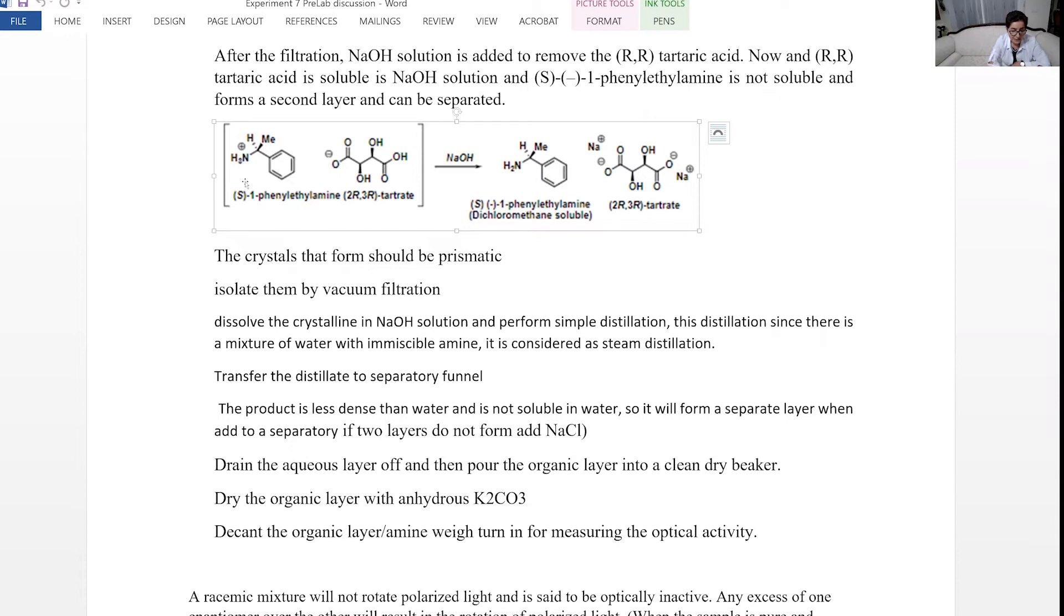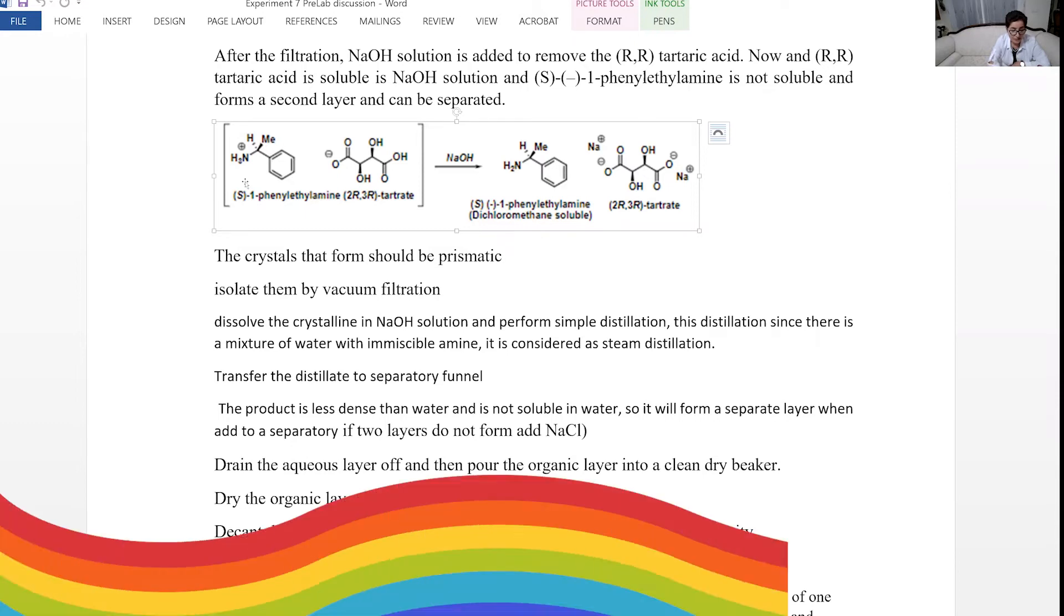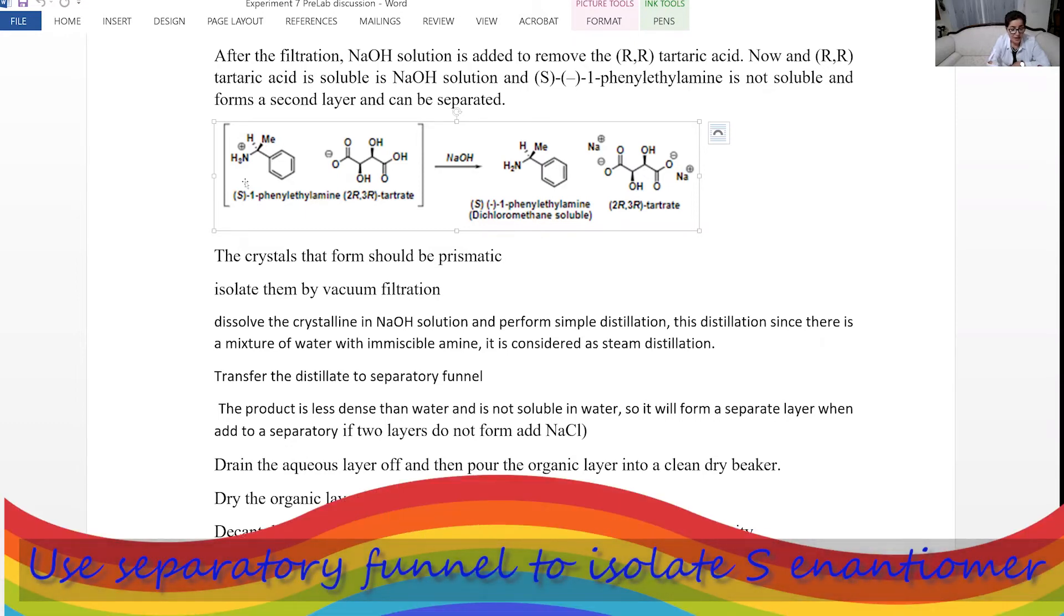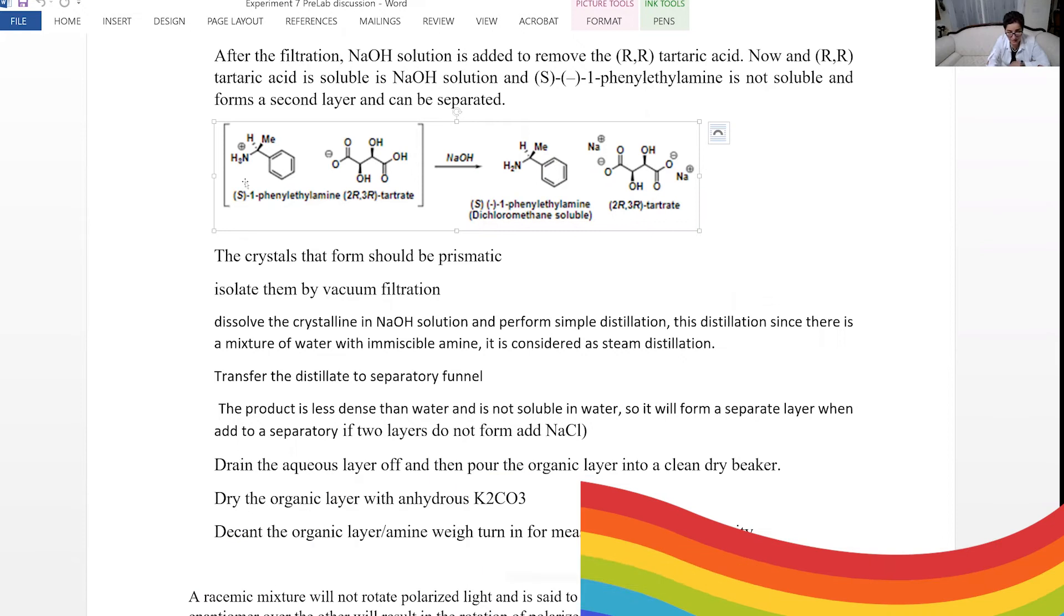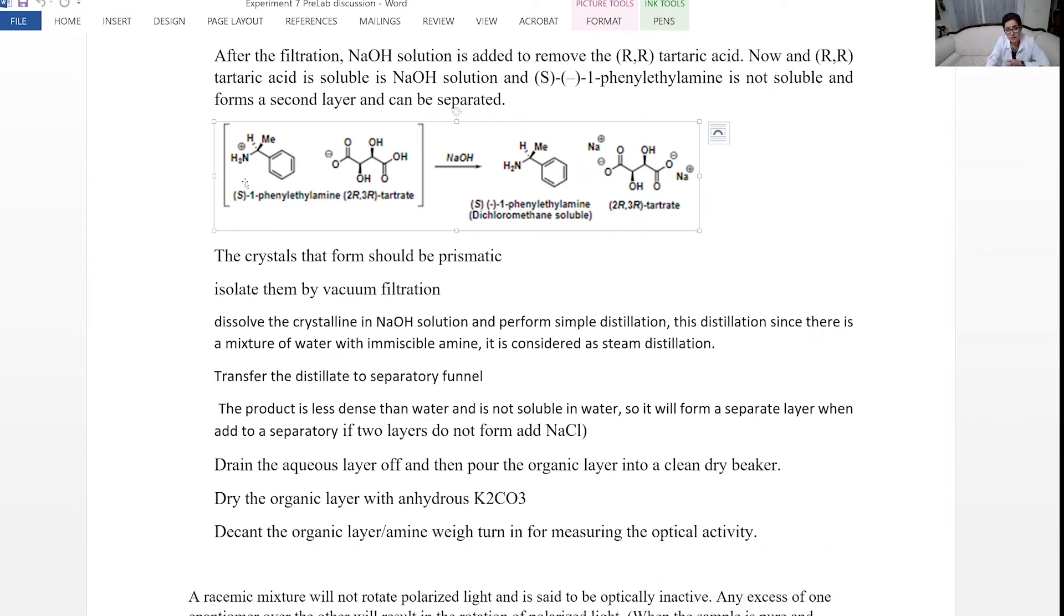And after you have the distillate, you transfer that to a separatory funnel. You add some sodium chloride to salt out that amine. That means that you make the amine less soluble in salt water. And then you separate the layers. The organic layer or the oily layer is your product.